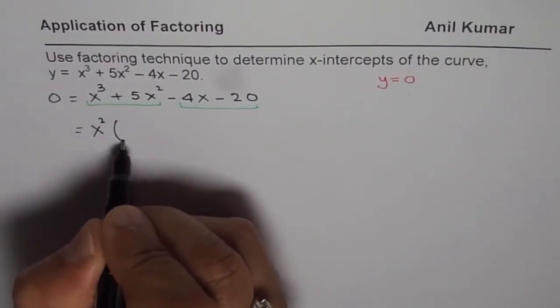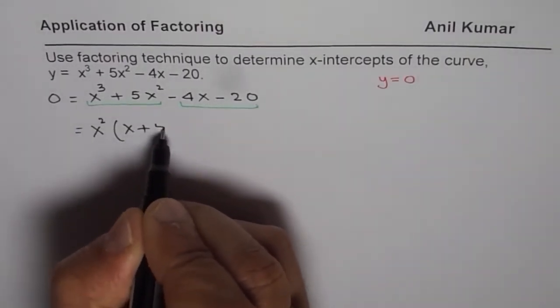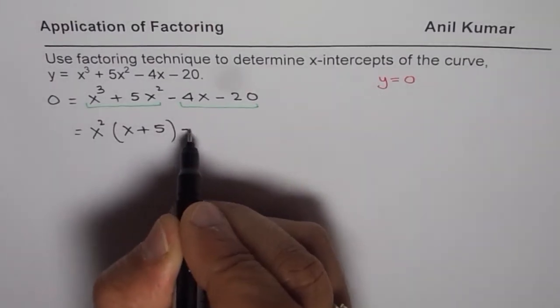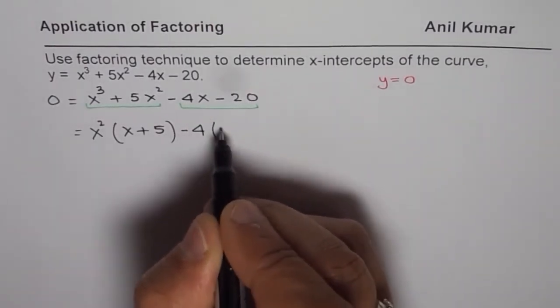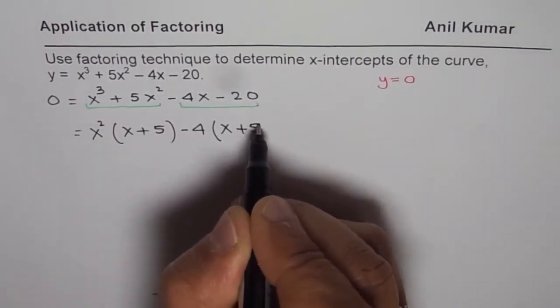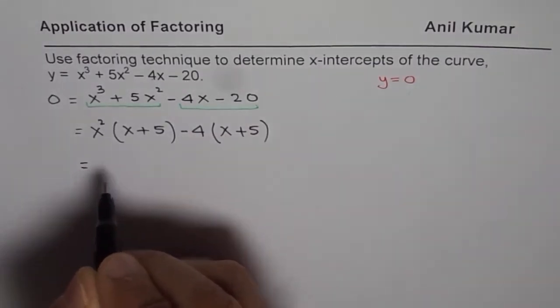x² is common. So, I could write this as (x + 5). In the second group, minus 4 is common and I could write this as (x + 5). Now, x + 5 is a common factor.